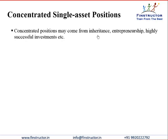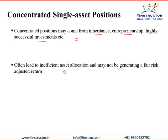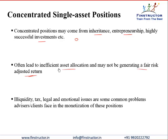Concentrated positions may come from a variety of sources. They could be a result of inheritance, successful entrepreneurship, or very successful investments which were a regular or small part of our portfolio many years back, but because of their significant outperformance have now occupied a large chunk of our overall net worth or overall assets. These positions often lead to inefficient allocation and may not be generating a fair risk-adjusted return. Even though one concentrated asset may have the potential for generating high return, it significantly increases the risk of our portfolio and our positions.